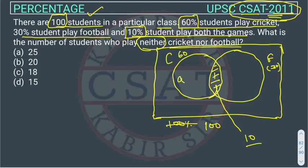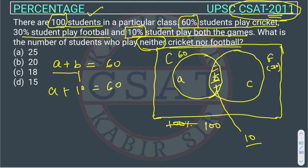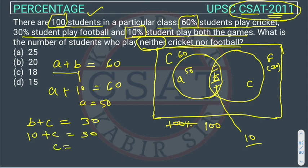Labeling the regions A, B, and C: A plus B equals 60, because that circle represents the total number of students playing cricket. We know B is 10, so A will be 50. Similarly, B plus C represents the number of students playing football, which is 30. Since B is 10, we get 10 plus C equals 30, so C equals 20.